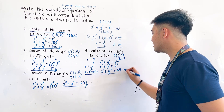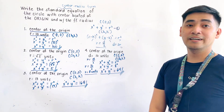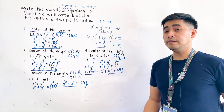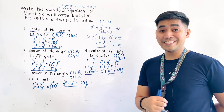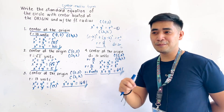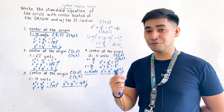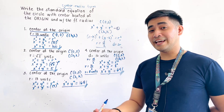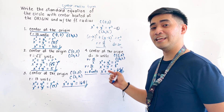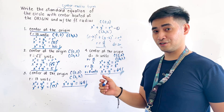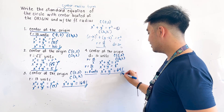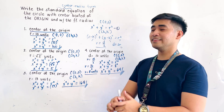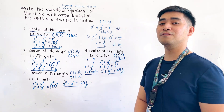8 squared is 64, so the final answer is x squared plus y squared is equal to 64. When given the diameter, all we do is divide it by 2 to get the radius, then substitute into the equation. That is how we write the standard equation of the circle.